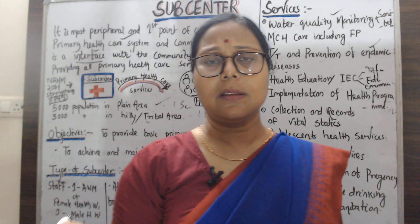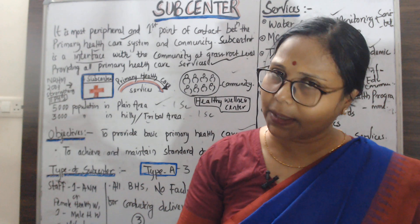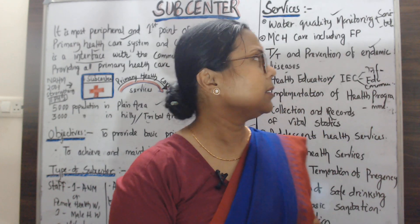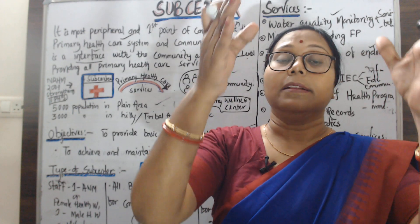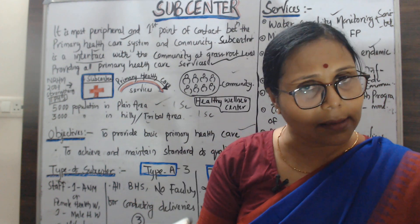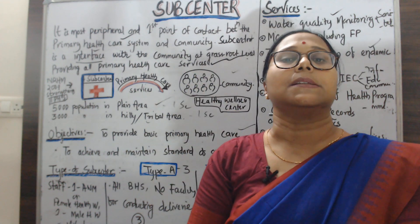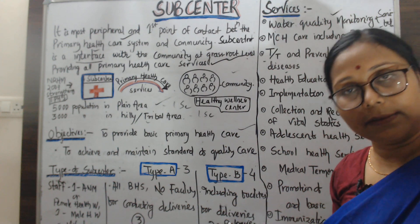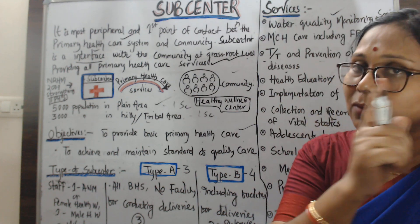There are two types of sub-centre: Type A and Type B. In Type A, all the basic health services are provided, but there is no provision for maternal and child health services. In Type B, all services are provided including maternal and child health services. Type B includes the facility for delivery and maternal and child health services, with approximately 20 deliveries carried out per month.